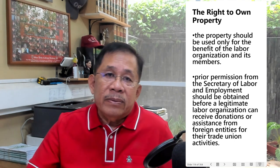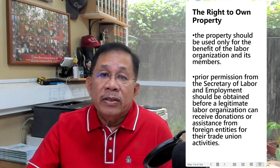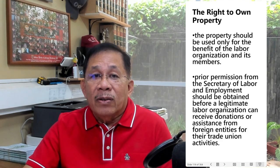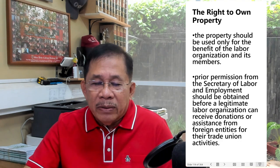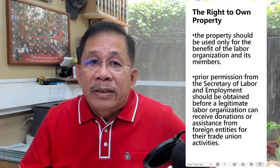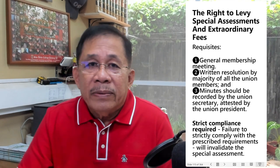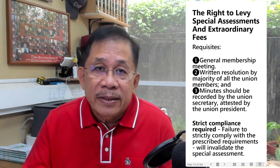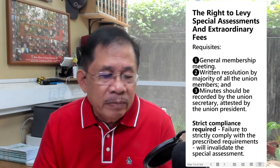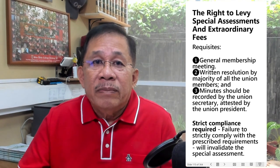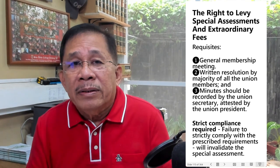Legitimate labor organizations can own real or personal property, but it should be used only for the benefit of the organization and its members. If labor organizations or their auxiliaries receive donations from foreign entities, they must seek prior permission from the Secretary of Labor. Article 292 authorizes unions to collect reasonable membership fees, union dues, assessments, fines, and other contributions for labor education, research, welfare funds, strike funds, and other similar activities.